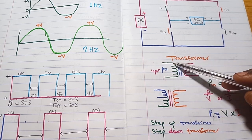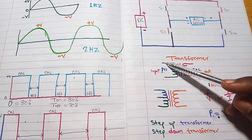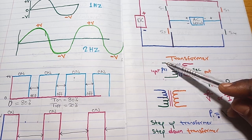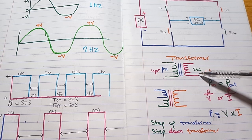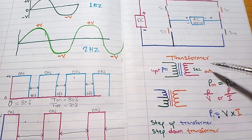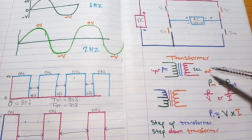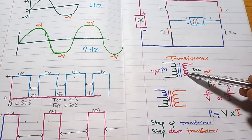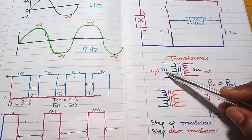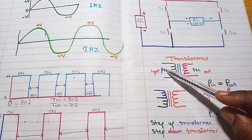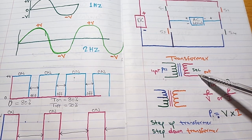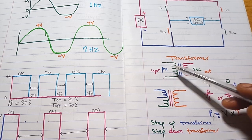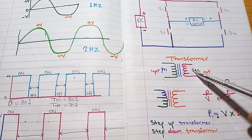Whenever you put 220 volts AC as your input into the primary and you want to get something like 12 volts or 24 volts AC at the output, that transformer is known as a step-down transformer. If we apply 220 volts at the input and we measure the voltage at the output and it is below the input voltage, it is known as a step-down transformer.